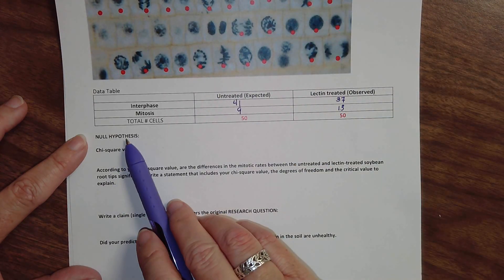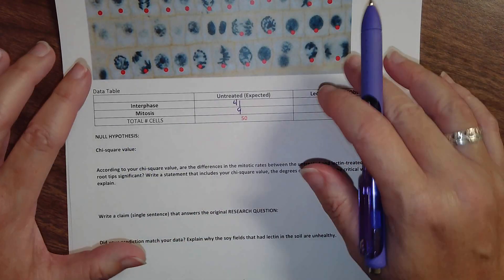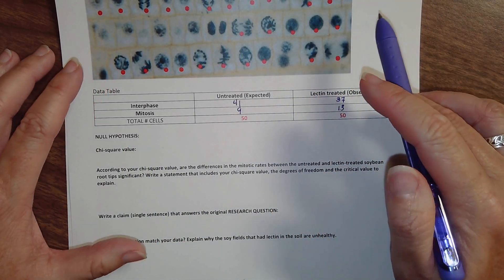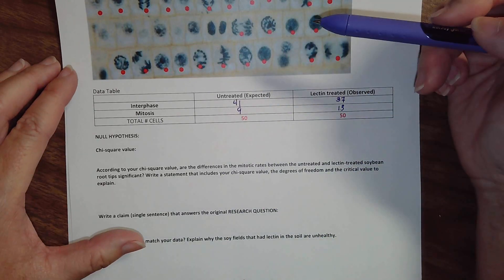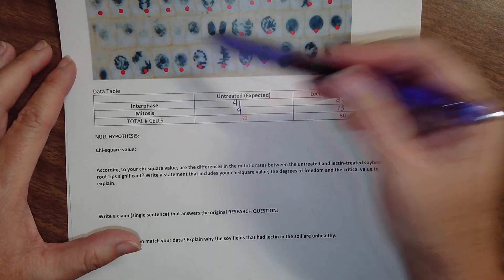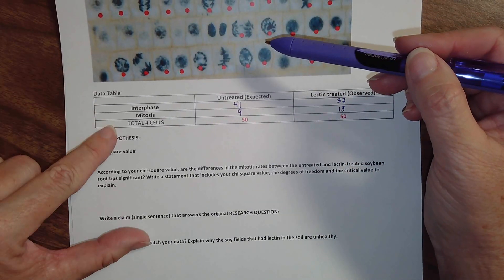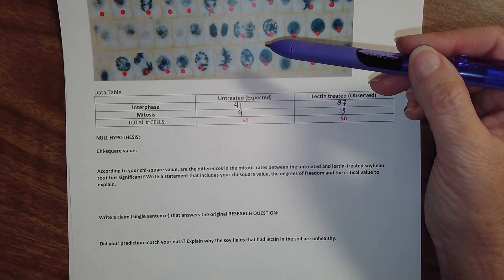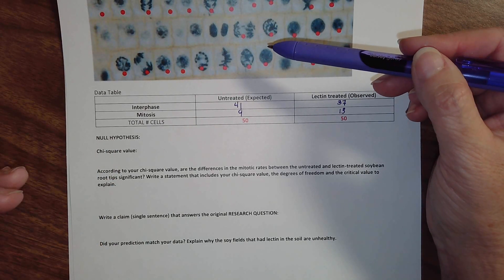So your null hypothesis when we're talking about two different treatments is always going to be that the treatment has no effect on whatever outcome we're looking at. In this instance we're looking at the rate of mitosis. So the rate of mitosis is equal for both treatments. That's our null hypothesis.